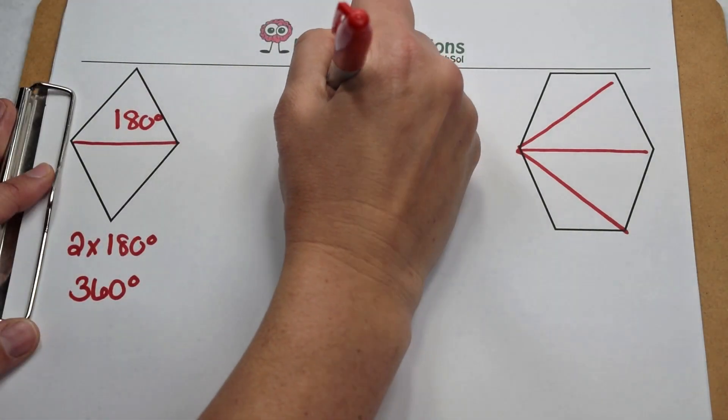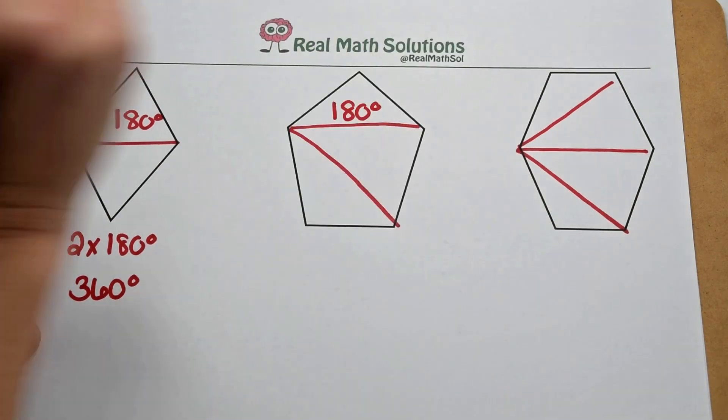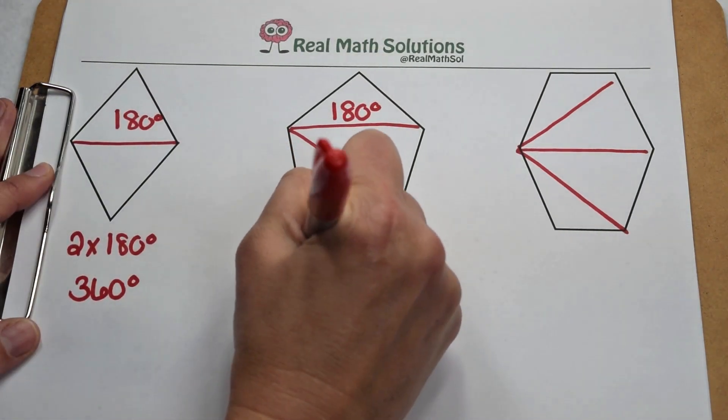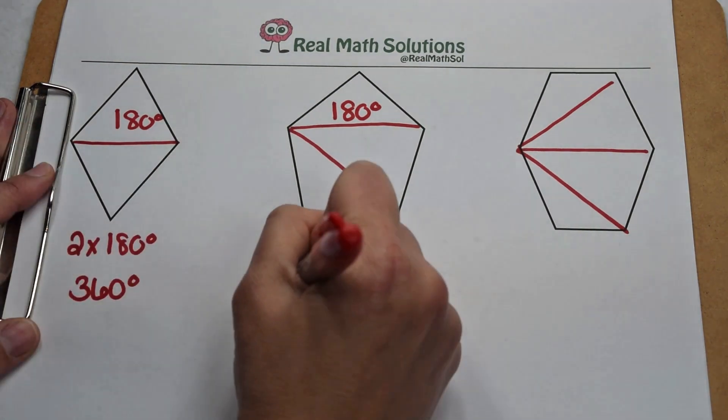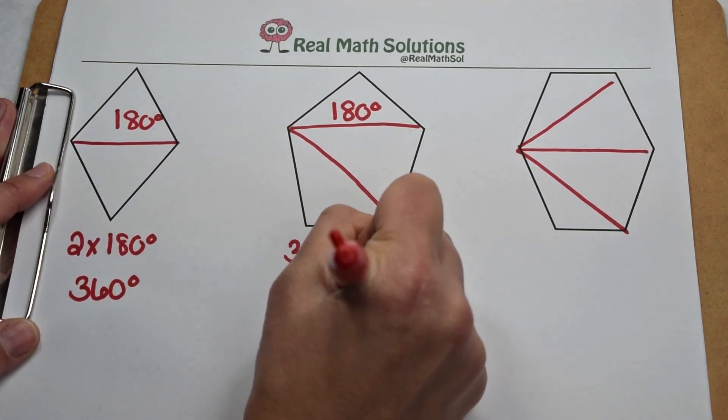Same thing on the pentagon. We know that each triangle is worth 180 degrees and we created three triangles. So to find the interior angle sum, I'm going to multiply 3 times 180 and that gives me 540 degrees.